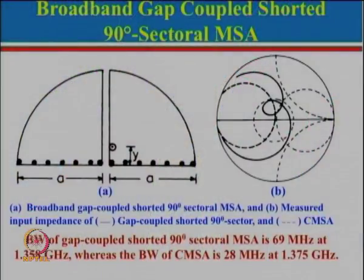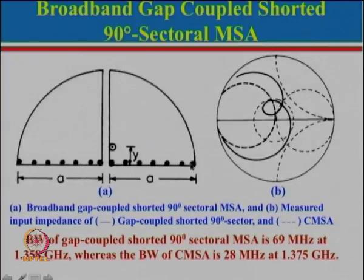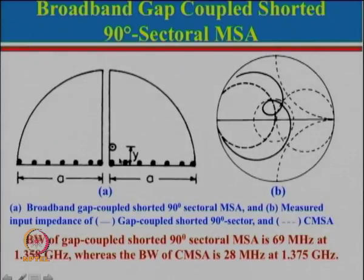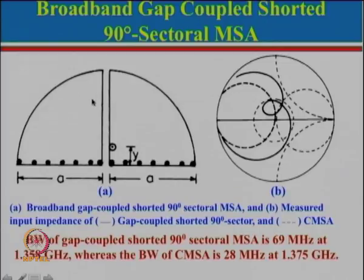Let us start with our first configuration. This is basically two shorted 90-degree sectoral microstrip antennas. In the previous lecture, the shorting was placed differently and the feed point was put there. But here we have made changes — we have put the shorting post here and this is the feed point. Think about this as a parasitic patch here. This is the one patch which is fed and this is the parasitic shorted patch, and we know that this configuration is about one-fourth of the circular microstrip antenna.